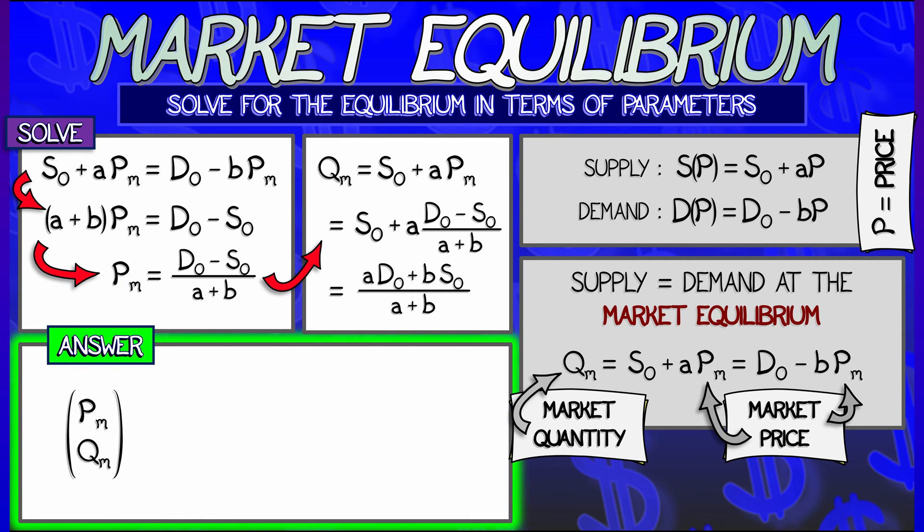So in the end, what I get is the market price and the market quantity as a function of these four variables: a, b, s-naught, and d-naught.